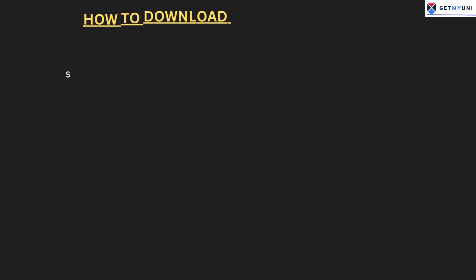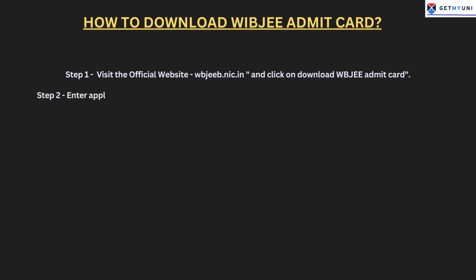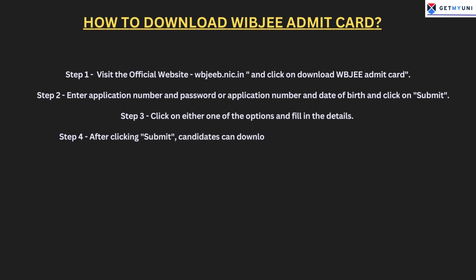The steps to download the WBJEE admit card are as follows. Step 1: Visit the official website wbgb.nic.in and click on 'Download WBJEE Admit Card'. Step 2: Enter your application number and password, or application number and date of birth, then click Submit. Step 3: Click on either one of the options and fill in the details. Step 4: After clicking Submit, candidates can download and print the WBJEE 2023 admit card.